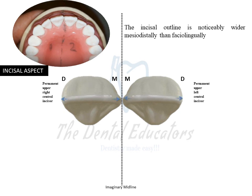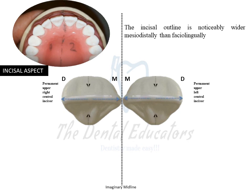Those are all the important identification points for the permanent maxillary central incisors. If you have any questions or queries, write them in the comment box and they will be answered. Thank you.